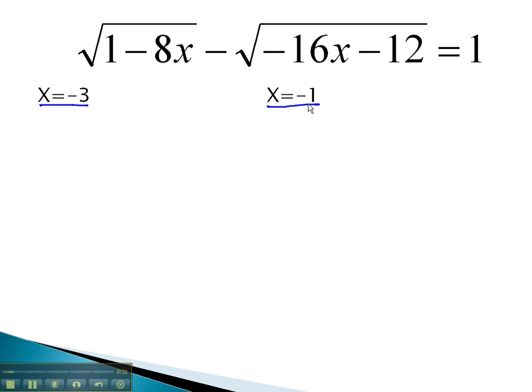Let's first check x equals negative 3. Plugging that in for each of the x's, we end up with the square root of 1 minus 8x, or negative 3, minus the square root of 16x, or negative 3, minus 12.